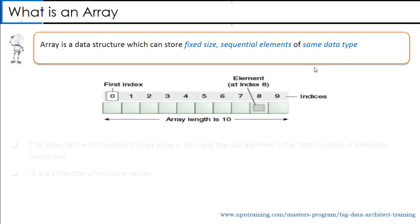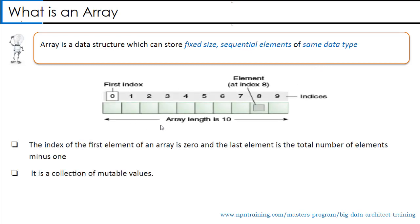Let's say I have declared an array of size 10. As we know, an array is accessed through an index. It starts from 0 and ends at array length minus 1, which is 9. If I want to access the first element, I use index 0. To access the last element, since the index starts from 0, the last index would be 9.